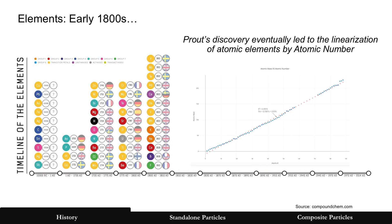That discovery eventually led to the linearization of atomic elements by their atomic number. You have atomic number on the bottom x-axis and weight or mass on the y-axis — and it's a line.